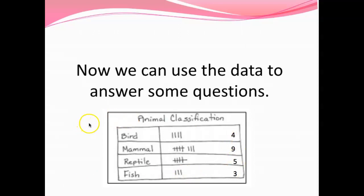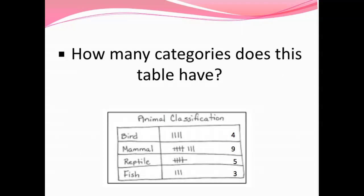Now we can use the data to answer some questions. I put the number below next to each category so we can easily see the number and don't have to count the tallies every time — you can add that to your chart if you'd like as well. So how many categories does this table have? Remember the categories are at the top of your tree map: bird, mammal, reptile, and fish. There are four categories in this data table.